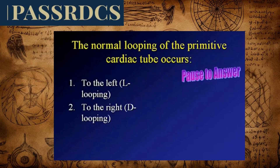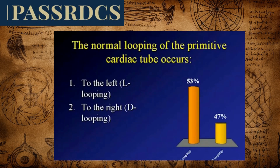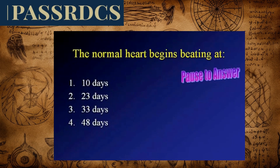We'll start with a question. The normal looping of the primitive cardiac tube occurs to the left or to the right? Pause to answer. I've presented this question to a previous audience, and the majority — although not a great majority — answered to the left. Unfortunately, they were wrong. The primitive cardiac tube loops normally to the right.